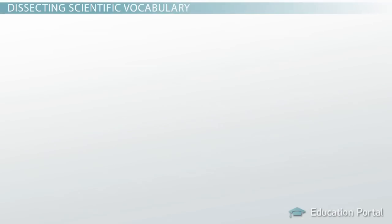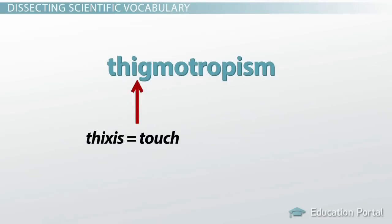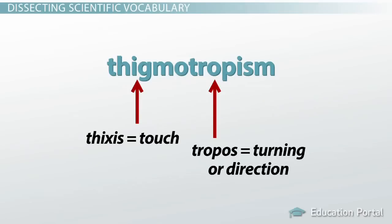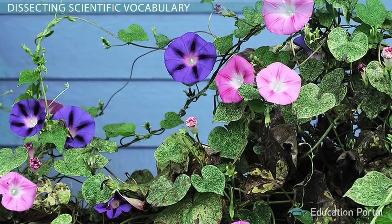For example, the word thigmotropism comes from a combination of two Greek words, thixis meaning touch, and tropos meaning turning or direction. Thigmotropism is the word we use to describe the coiling growth patterns that some plants exhibit in response to touch.